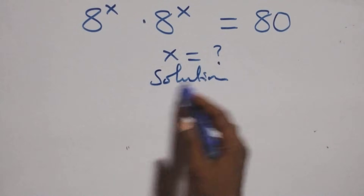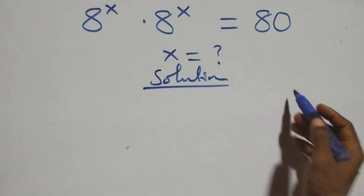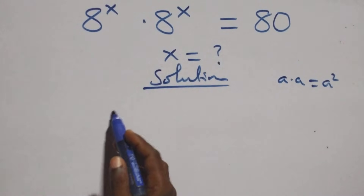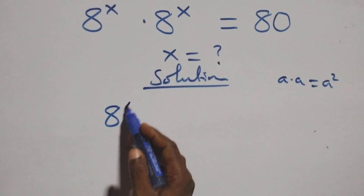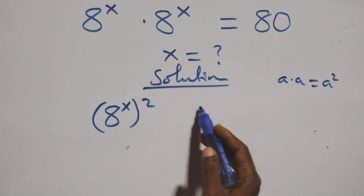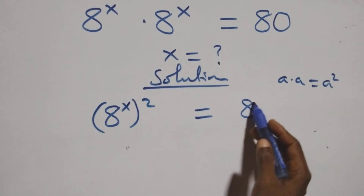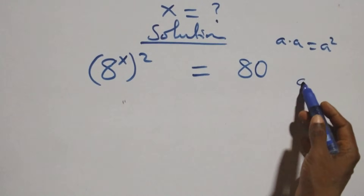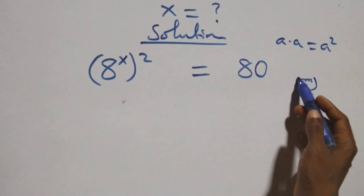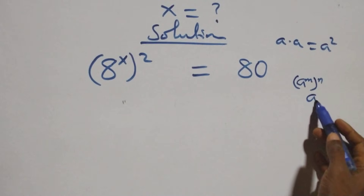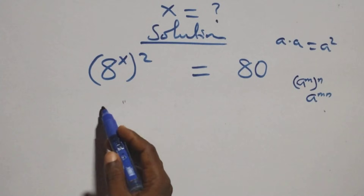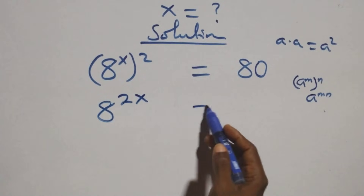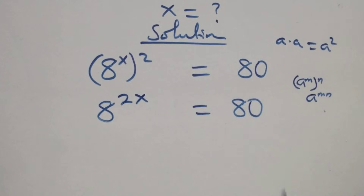From what we have here, it follows that when we have a times a, which is the same thing as a squared. So we can write this as a raised to the power x, squared, equals 80 from here. This follows when we have a raised to power n, 4 raised to power n, which is the same thing as a raised to power mn. As the power multiplies, we have a raised to power 2x equals 80 on this side.